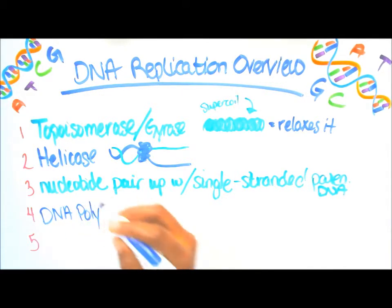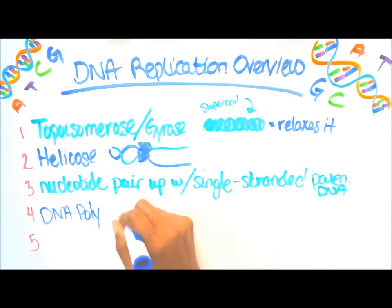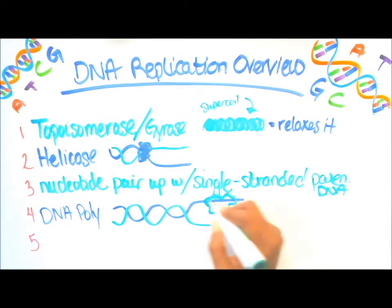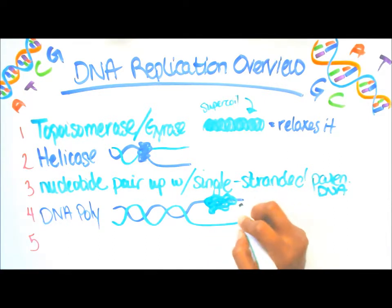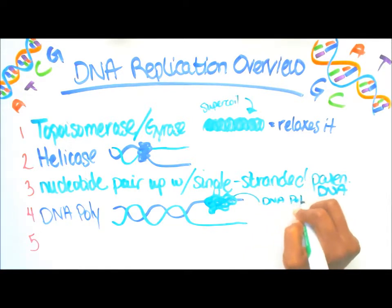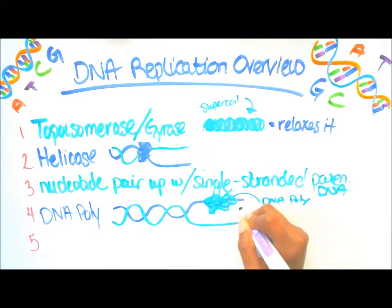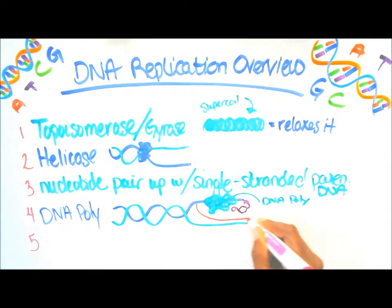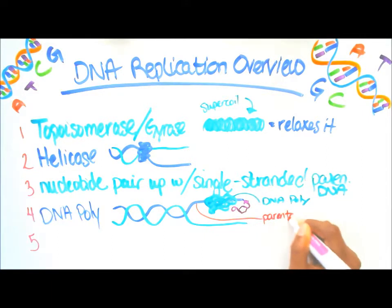DNA polymerase comes in and adds the nucleotides to the parental DNA. So we have our DNA, our DNA polymerase, and our nucleotides that link up with our parental DNA.